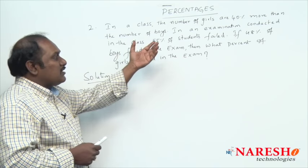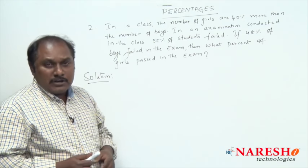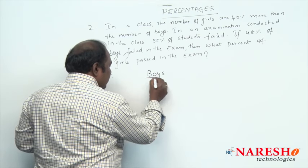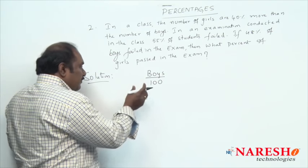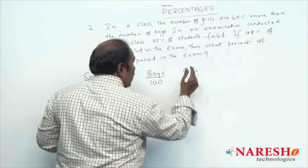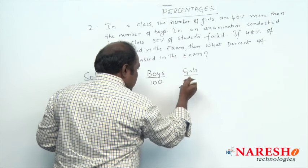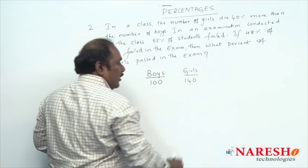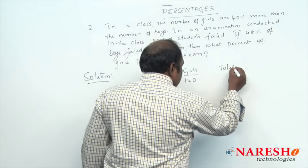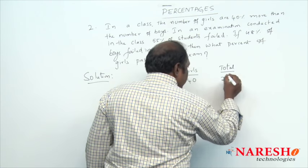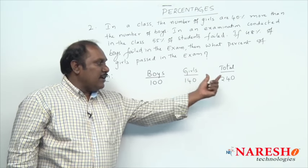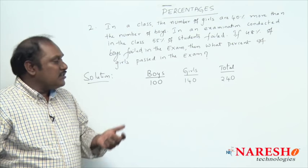Number of girls are 40 percent more than number of boys. So let us assume the number of boys in the class is 100. If the number of boys is 100, then the number of girls should be 40 percent more than boys, that is 140. So if boys are 100 and girls are 140, the total strength will be 240.